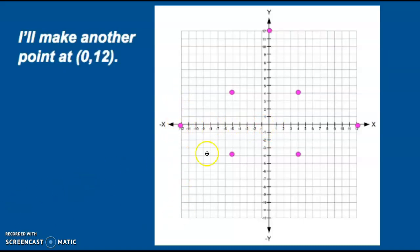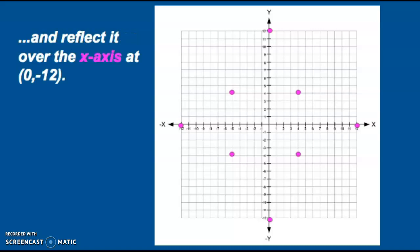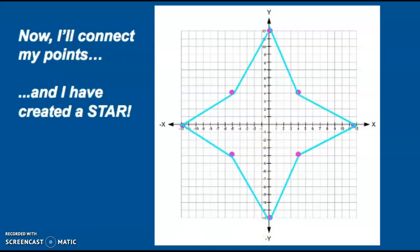I'll make another point at (0,12), and reflect it across the x-axis down here. Can you name that coordinate? It reflects over the x-axis at (0,-12). To complete my star, I'll connect the points with lines, and I have created a star.